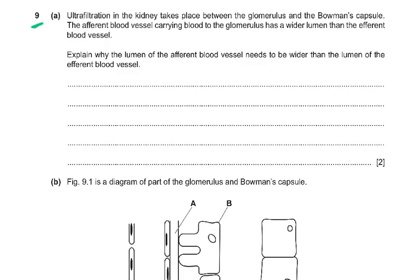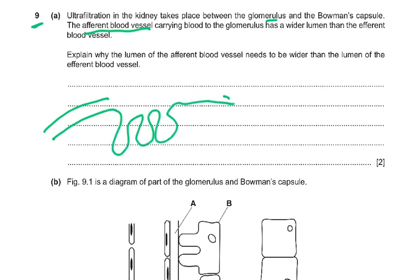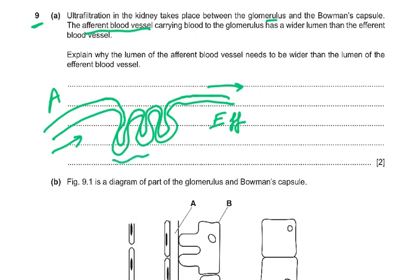Coming to question number 9. Ultrafiltration in the kidney takes place between the glomerulus and the Bowman's capsule. The afferent blood vessel enters the glomerular capillaries and the efferent blood vessel exits — A for afferent, E for efferent. The afferent blood vessel has a wider lumen than the efferent. To explain why: the wider afferent and narrower efferent generate high blood pressure or hydrostatic pressure, forcing fluid or plasma out through the basement membrane into the Bowman's capsule.